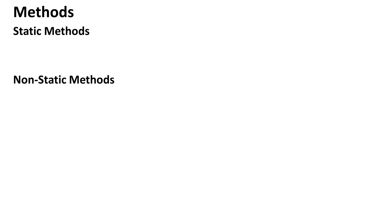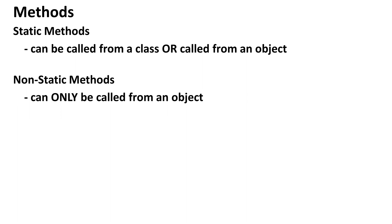Next, let's look at methods again. There are two types of methods, static and non-static methods. First, static methods can be called from either the class or an object. While non-static methods can only be called from an object.